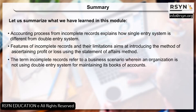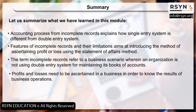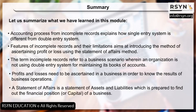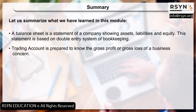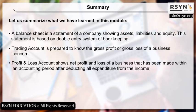Summary: The term incomplete records refers to a business scenario wherein an organization is not using the double entry system for maintaining its books of accounts. Profits and losses need to be ascertained in a business in order to know the results of business operations. A statement of affairs is a statement of assets and liabilities prepared to find out the financial position or capital of a business. A balance sheet is based on the double entry system of bookkeeping. The trading account is prepared to know the gross profit or gross loss, and the profit and loss account shows net profit and loss after deducting all expenditure from income.